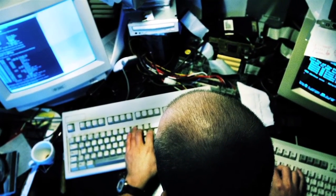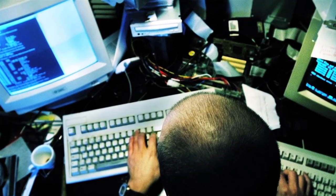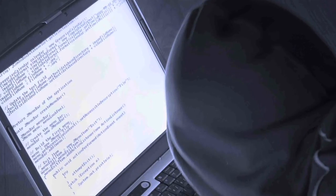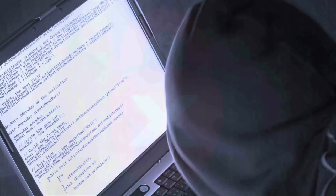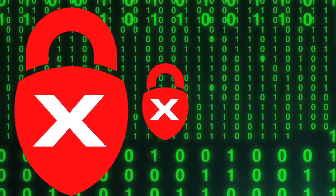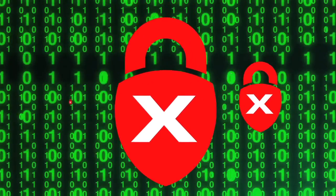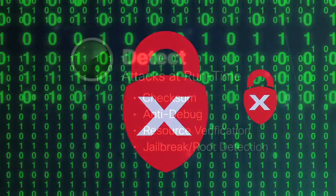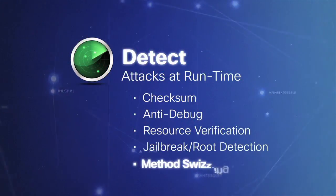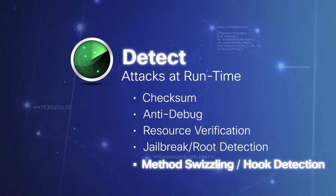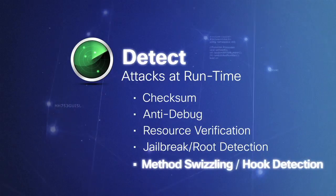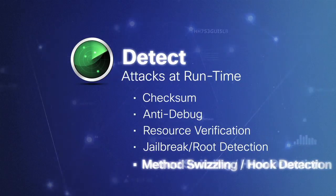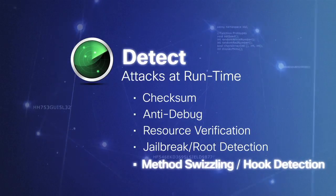In addition to detecting hacking attempts by malicious actors, these guards can also detect another seemingly innocuous but malicious application from performing a drive-by attack at runtime. Another app can compromise your app via runtime method swizzling or function API hooking to steal information or gain control.